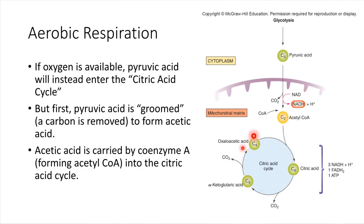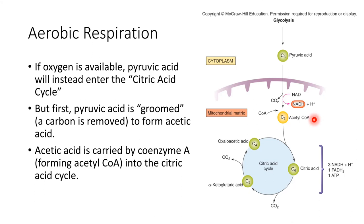The citric acid cycle is the next step that happens during the breakdown of a glucose molecule. During the citric acid cycle, what we end up producing is three molecules of NADH, one molecule of FADH2, and one molecule of ATP — and that's true for every acetyl-CoA that goes into the cycle. Remember from glycolysis we actually produced two molecules of pyruvic acid, so there are going to be two molecules of acetyl-CoA entering this cycle, meaning the net number of molecules produced is actually double.